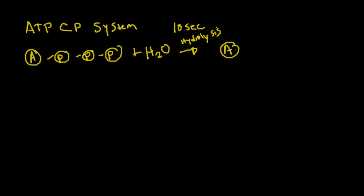We're going to use hydrolysis to break that phosphate off and release energy, and that's going to leave us with adenosine. So we have two phosphates here, plus the phosphate that we broke off, plus some energy.